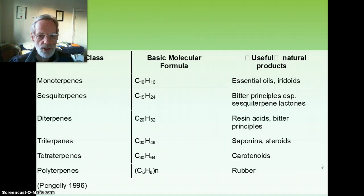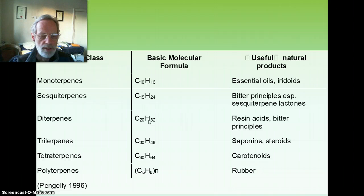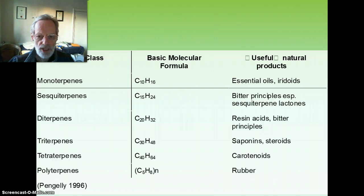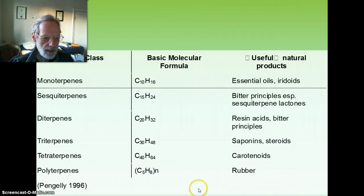Here we have a table illustrating how the different sizes of terpene compounds are related. Diterpenes with 20 carbons include bitter substances like those found in Marrubium vulgare, white horehound, and Leonurus cardiaca. The triterpenes with 30 carbons include both the triterpenoid saponins and the steroidal saponins, resembling steroidal hormones and often playing a similar regulatory and signalling role in plants, but more crucially interfering with insect and mammalian reproduction. Then we have rubber, which is a massive polymer of terpenes.